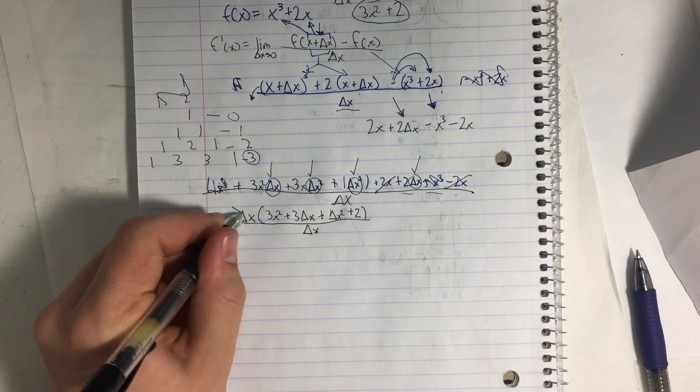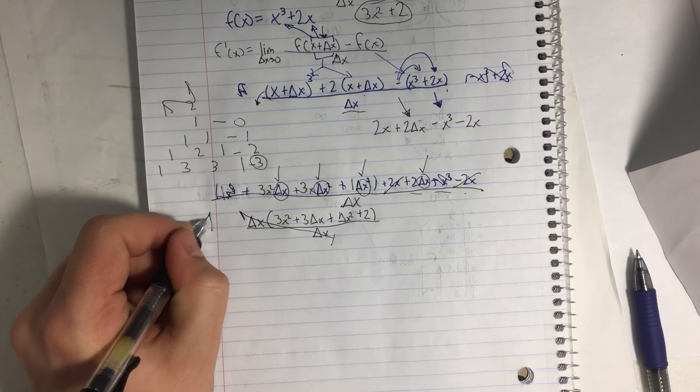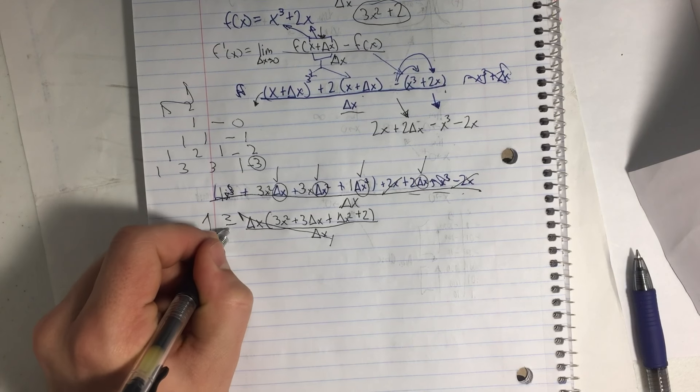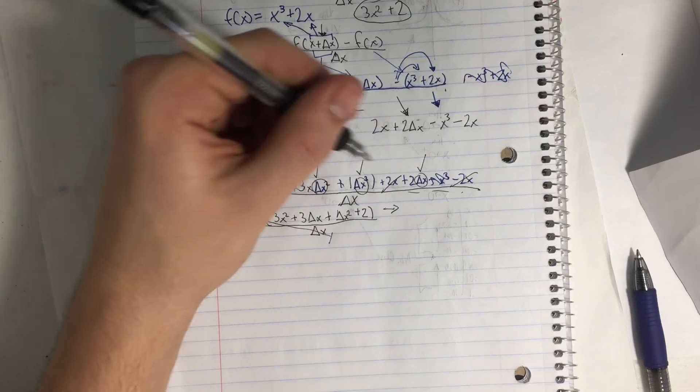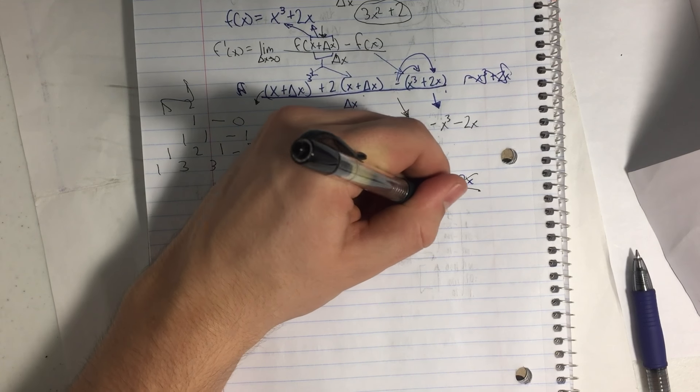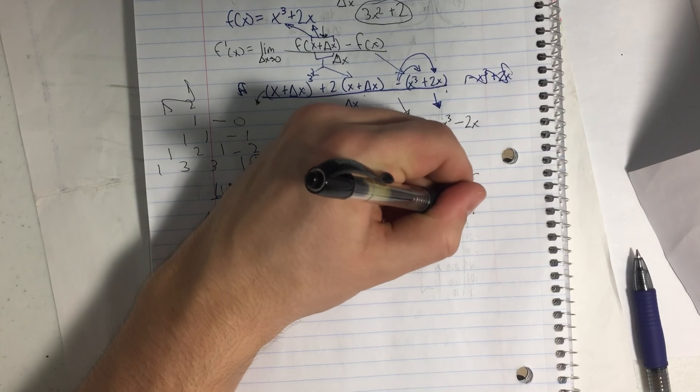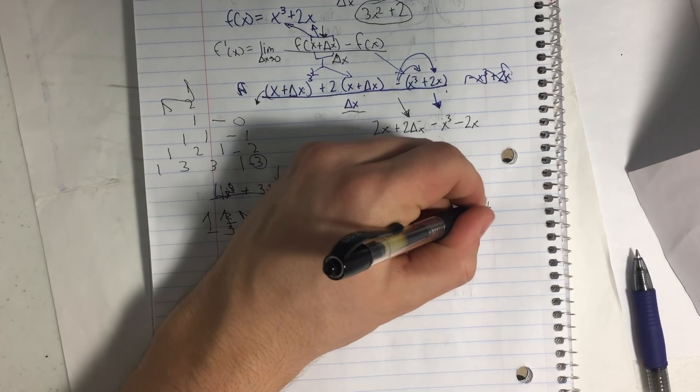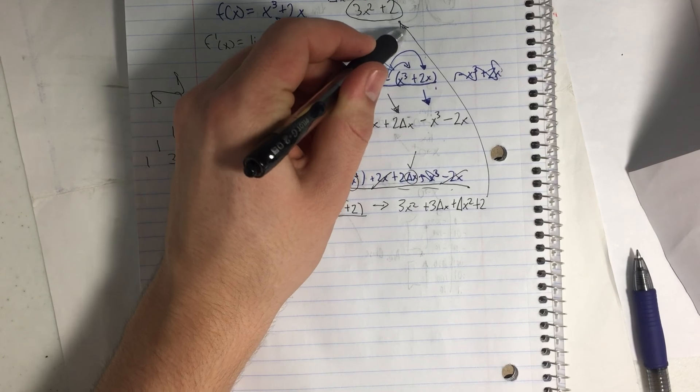And so now we can cross out these Δx's because they make a giant 1. Right. 2 divided by 2 is 1. And anything multiplied by 1 is itself. So on the top, we have 3x² + 3Δx + Δx² + 2. And you're probably like, hey, that's not like this.